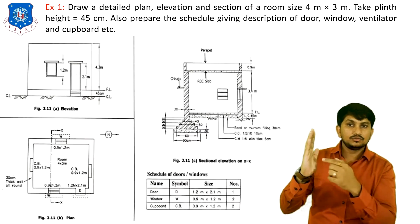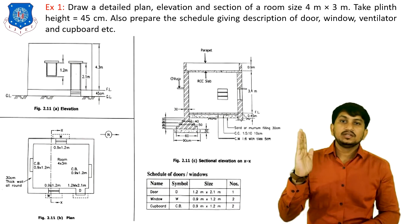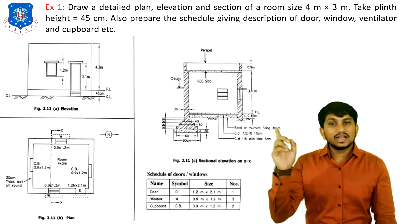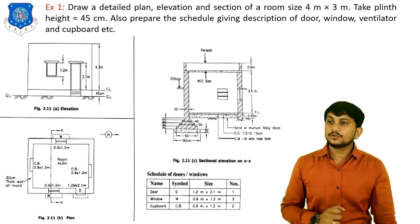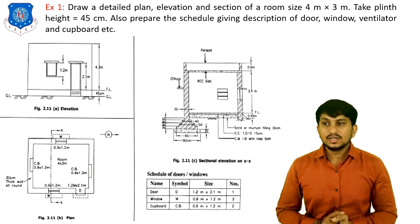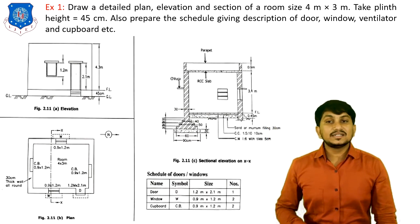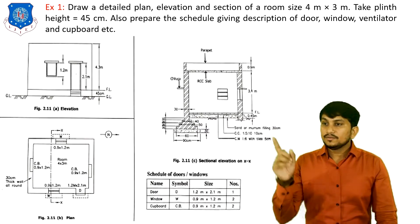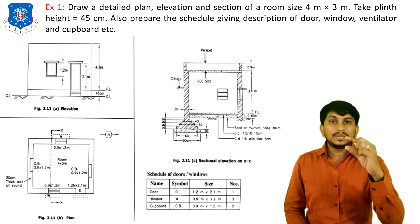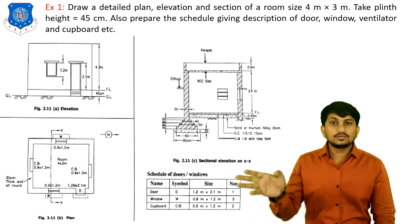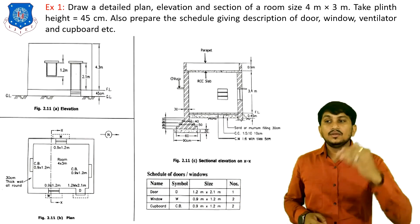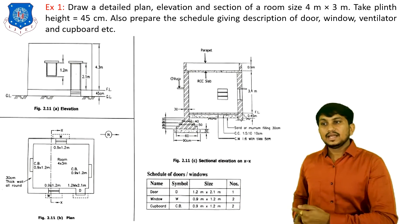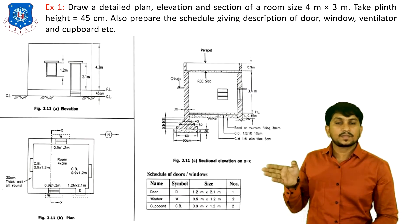From the line plan we draw the plan. In elevation we show the height of the building — here 4.3 m including the parapet. The door height is 2.1 m, window height is 1.2 m, and plinth height is 45 cm. In elevation we show the ground level, floor level, and height of the building. From the plan and elevation we can draw the section.